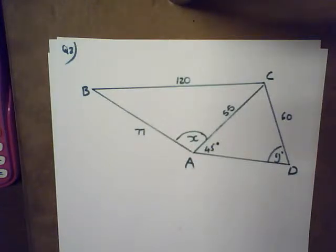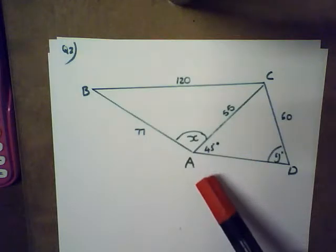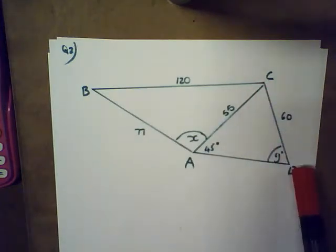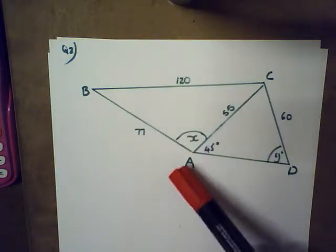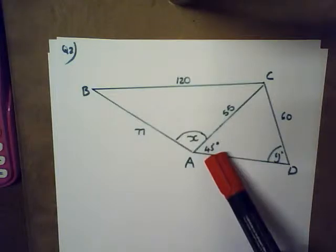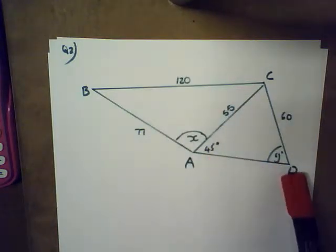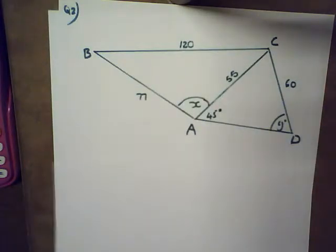Let's move on to question two. In quadrilateral ABCD: AB is 77, BC is 120, CD is 60, and the diagonal AC is 55 meters. Angle CDA is 45 degrees and angle BAC is x degrees, angle ADC is y degrees. We are asked first to calculate x, then calculate y.